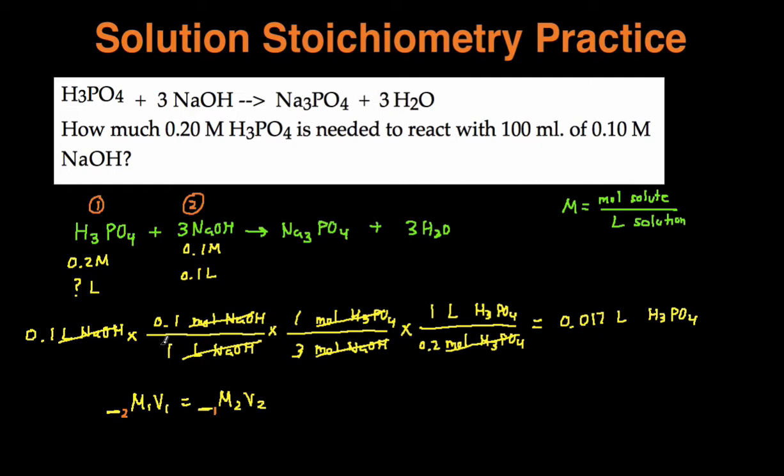Plugging in the numbers, the coefficient in front of 2 was 3. M1V1, the volume was unknown, so we're going to just call that x liters. The coefficient in front of 1 was just 1. And then the molarity M2 was 0.1 molar.